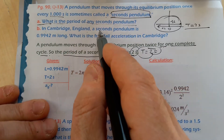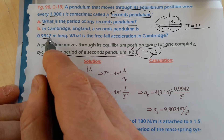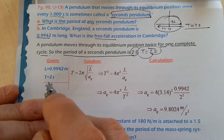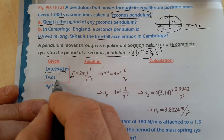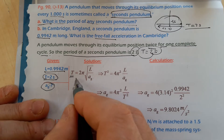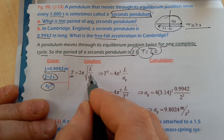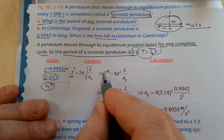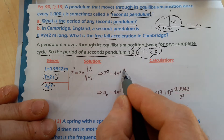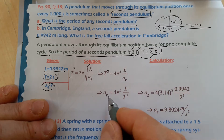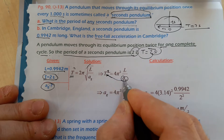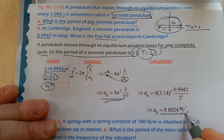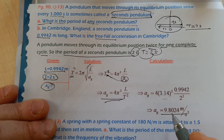In Cambridge, England, a seconds pendulum is 0.9942 meters long. What is the free-fall acceleration in Cambridge? Using T = 2π√(L/g), we know T = 2 seconds and L = 0.9942 m. Squaring both sides: T² = 4π²(L/g), so g = 4π²L/T². Substituting the values gives g = 9.824 m/s².